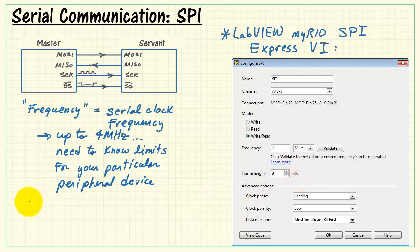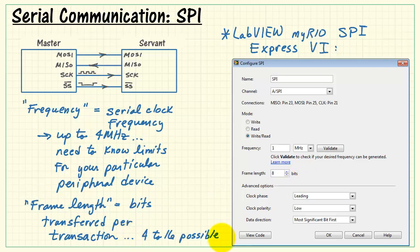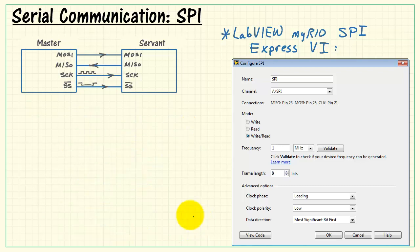Over here, the frame length is defaulting to 8 bits. Frame length is the number of bits that's transferred per transaction. MyRio supports anywhere from 4 to 16 bits per frame, and 8 is most common. I'll come back to these advanced options as we work our way through the bus timing.